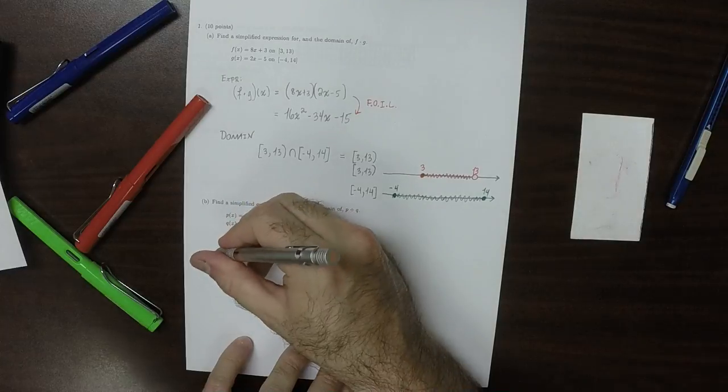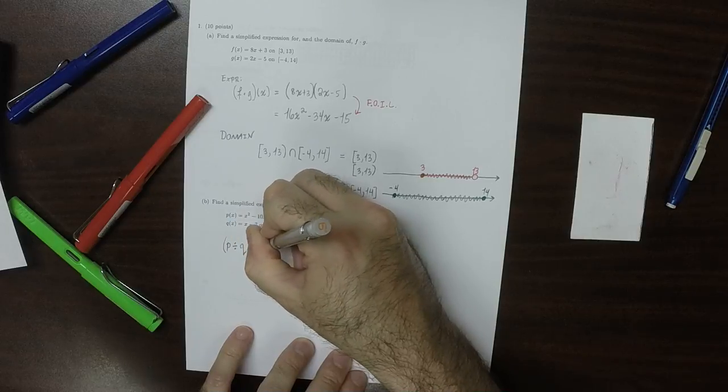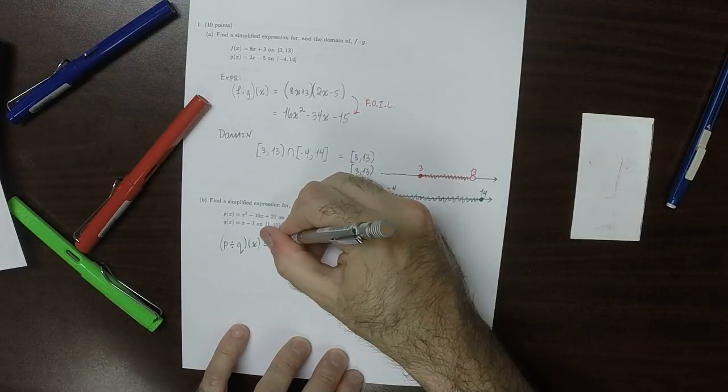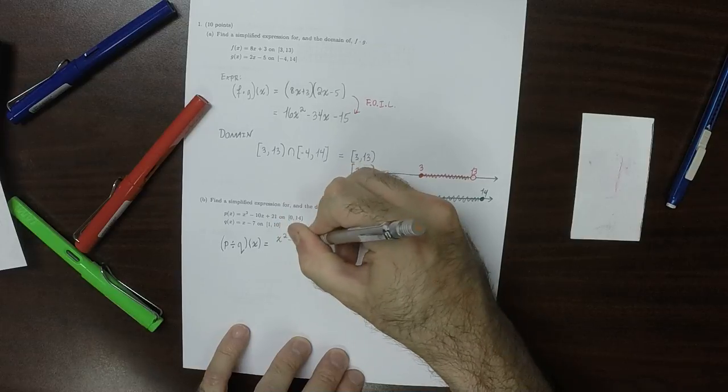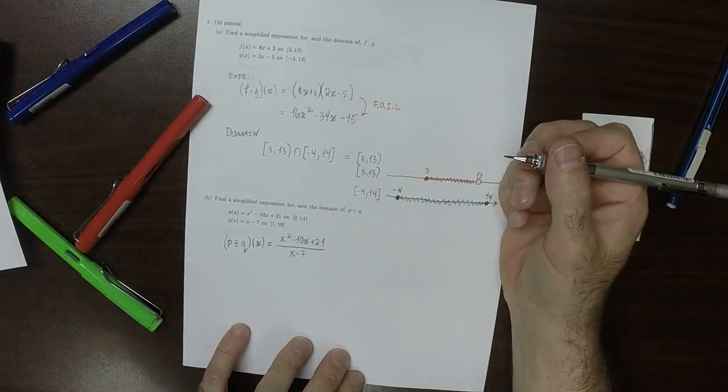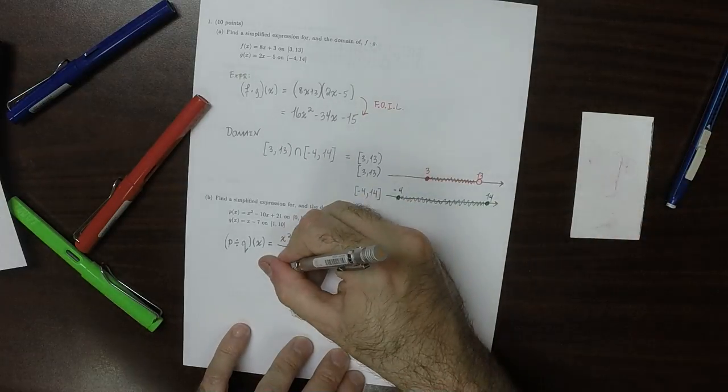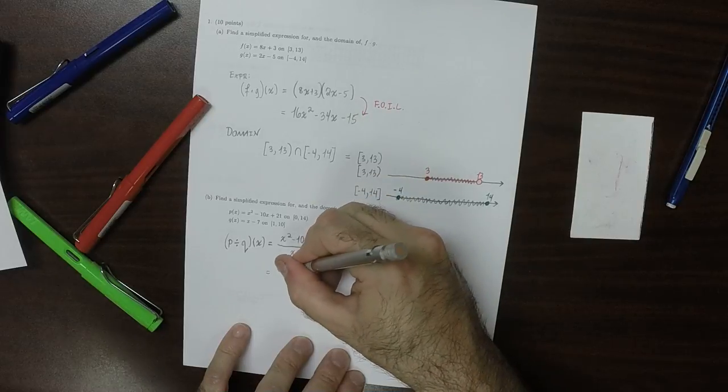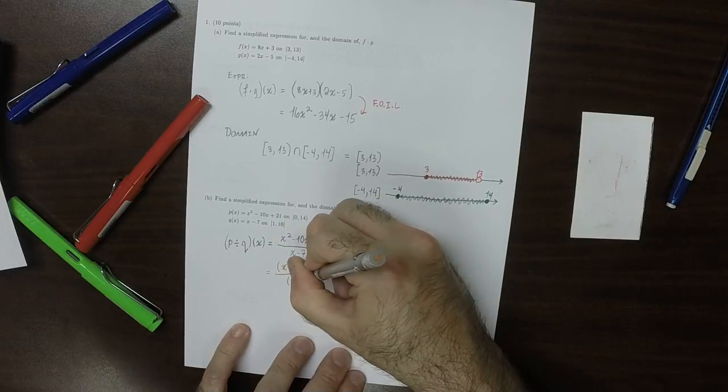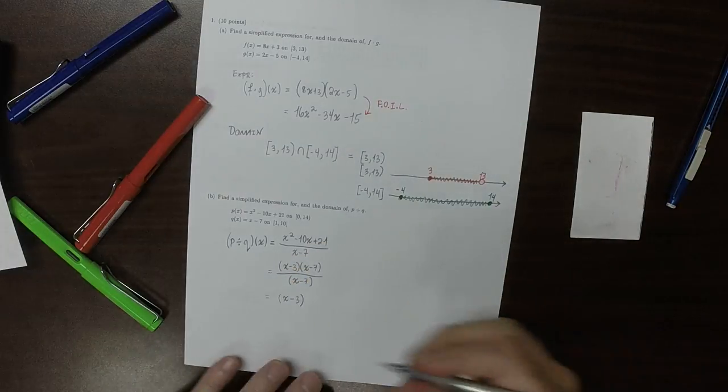Similar question. So p divide q, evaluate at x. So that'll be x squared minus 10x plus 21, and then divide by x minus 7. Well, that quadratic factors to (x minus 3) multiplied by (x minus 7), and then over x minus 7. So the x minus 7's cancel, and we're left with x minus 3. That's the expression.